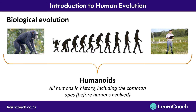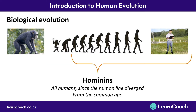Some key terms that might come up: 'humanoids' means all humans in history including the common apes that we evolved from — anything at any time that eventually ended up in the human line. You might also see the word 'hominins', which refers to all humans since humans diverged from the common ape. For the purposes of your exams, you can treat them roughly the same when interpreting questions.